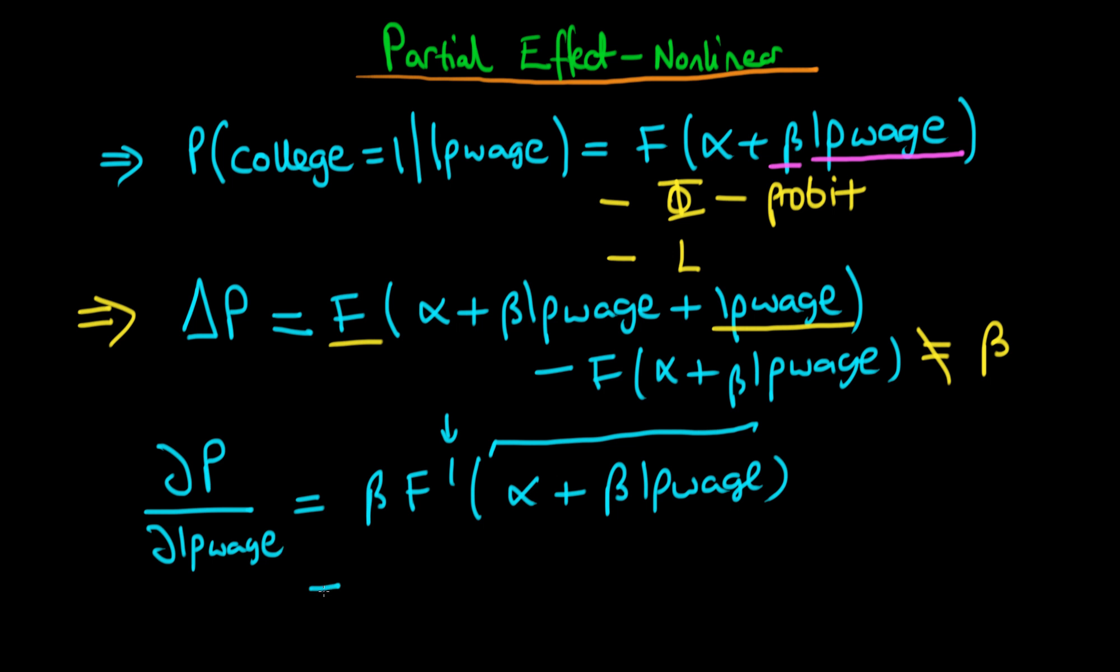And actually, just to make this thing look a little bit simpler, I'm just going to write this as beta times small f of alpha plus beta times the log of parental wage, where small f here indicates it's the differential, or first differential, of capital F.